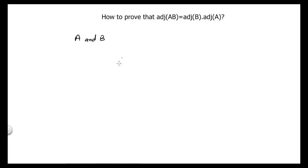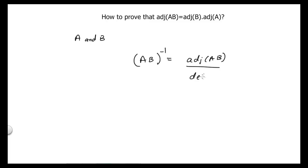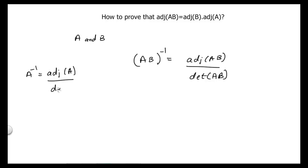The proof is very simple. We can start from: AB inverse is equal to adjoint of AB divided by determinant of AB. This is the very general formula which we use to find the inverse of any given matrix. To clarify, we can write A inverse is equal to adjoint of matrix A divided by determinant of matrix A.